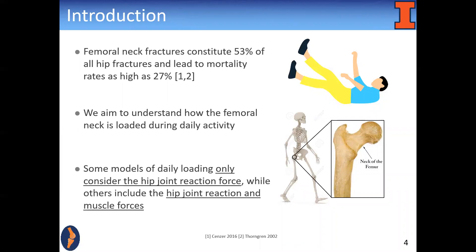However, several questions persist regarding daily loading of the femoral neck. For example, how is daily activity best represented in FE models? Is it enough to only include the hip joint force, or should all 22 hip spanning muscles also be included? What exactly are the consequences of these two different models on the strain distribution?